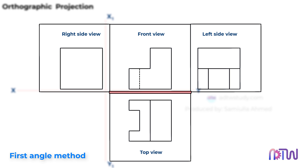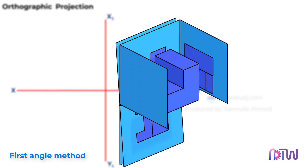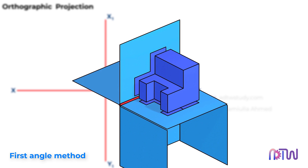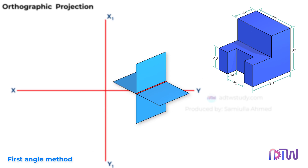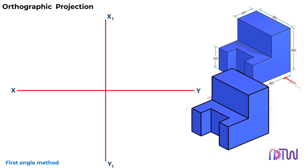With this basic understanding we can proceed to draw the orthographic views of this given isometric figure. Before drawing, we will keep a 10 millimeter space from the vertical and horizontal axes. We will draw the front view above the reference line, then the top view below the reference line, and finally the left side view on the right side by projecting lines from the drawn front and top views.